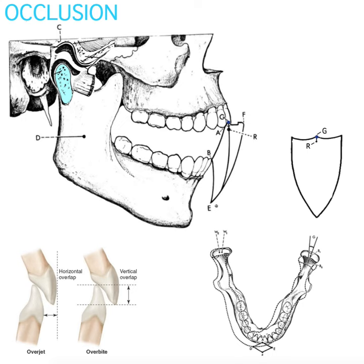This point down here represents E, which is maximum opening. You can imagine a line through here representing extended opening, centric relation, and the protruded movement. All these planes sort of squish back into one line, so you can't really appreciate them from the frontal view.